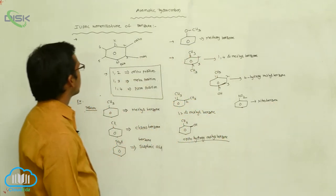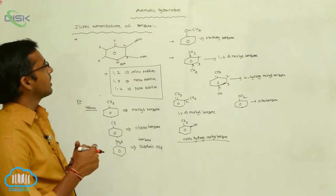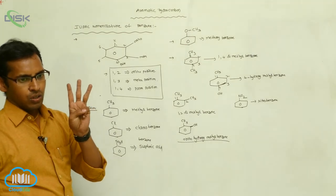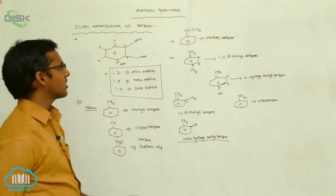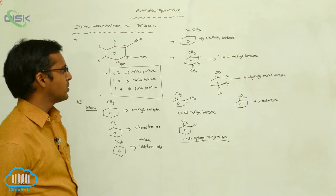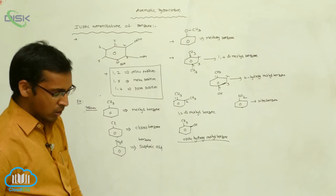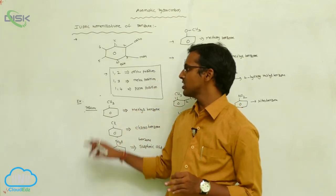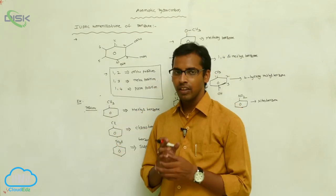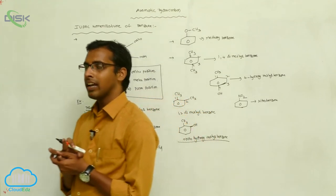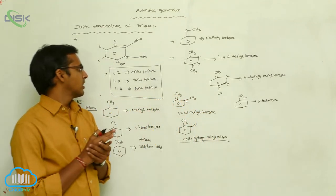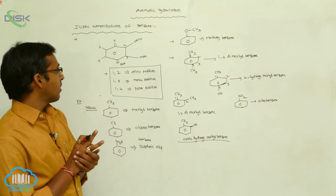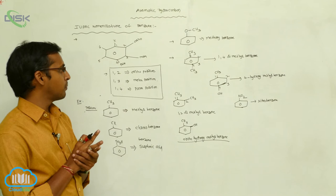So this is the IUPAC nomenclature of benzene. Mainly, 3 positions are there: ortho position, meta position, and para position. Ortho position means in aromatic hydrocarbons at 1,2 positions; meta position is at 1,3; and para position is at 1,4 in aromatic hydrocarbons or arenes.